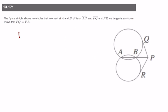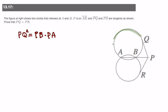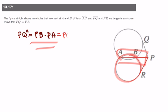Number 17: we have two circles and need to show that PQ equals PR. PQ squared, because PQ is tangent, equals PB times PA — from the first circle, with PQ as tangent and the secant. Looking at the second circle, PA is a secant and PR is tangent, so that equals PR squared. We can say PQ squared must equal PR squared, therefore PQ must equal PR.